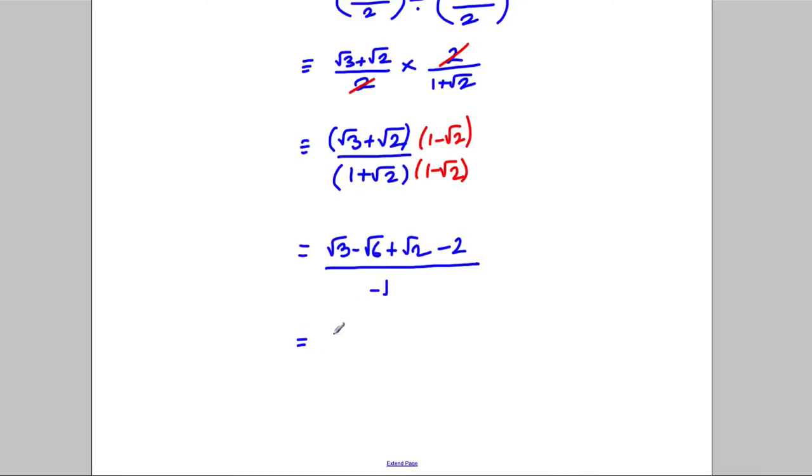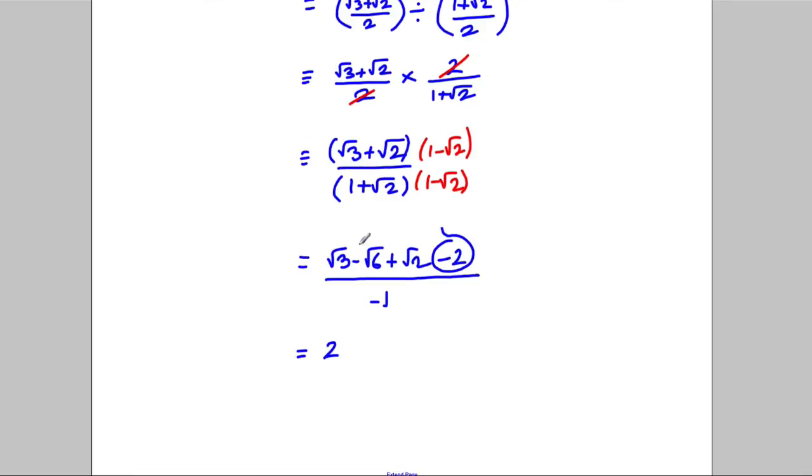So what would we have? We'd have all of this divided by negative 1, which just changes the signs of each of these. So what it would be, the negative 2 would be a 2, the negative root 6 would be plus root 6, and both of these would be negative, so root 3 and root 2, like that.